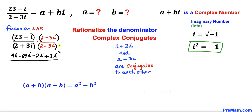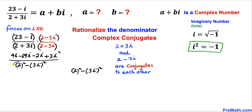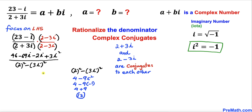For the denominator, we recall the identity (a + b)(a − b) = a² − b², so the denominator is 2 squared minus (3i) squared. Simplifying: 4 minus 9i squared. Since i squared equals negative 1, this becomes 4 minus 9 times negative 1, which gives us 13.